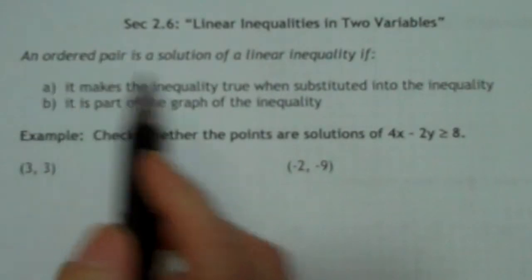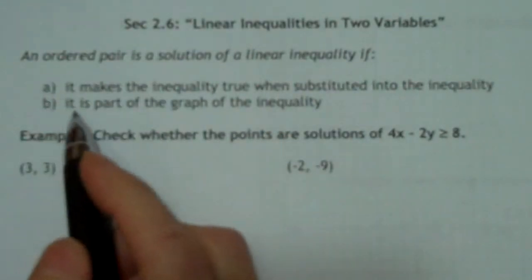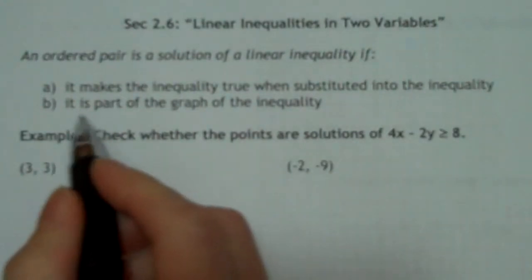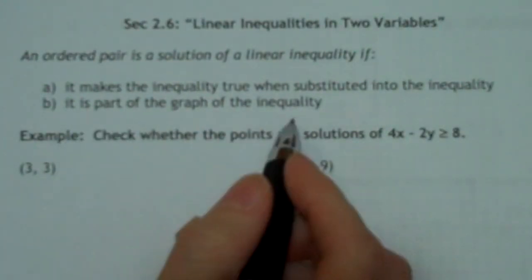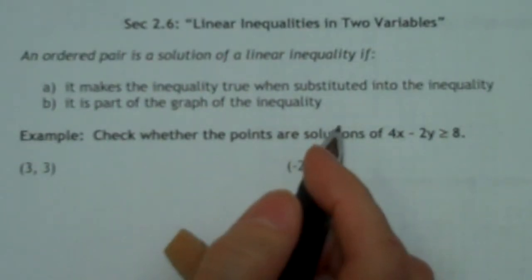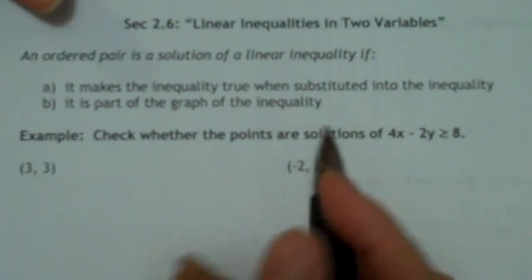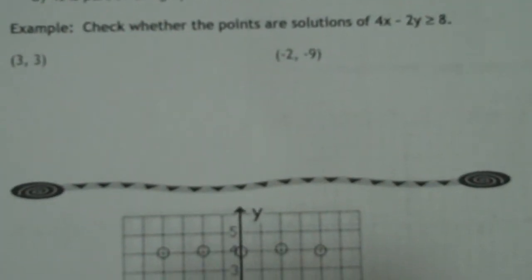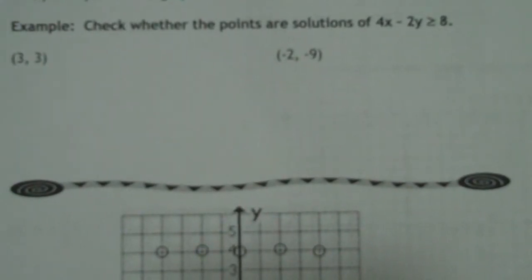An ordered pair is the solution of a linear inequality if it makes the inequality true when substituted into the inequality, and it's a part of the graph of the inequality. So basically, to check if it's a solution, we're just going to plug it in and see if it works. For our first thing, they give us two different points, and they want us to check to make sure that they are solutions for that inequality.